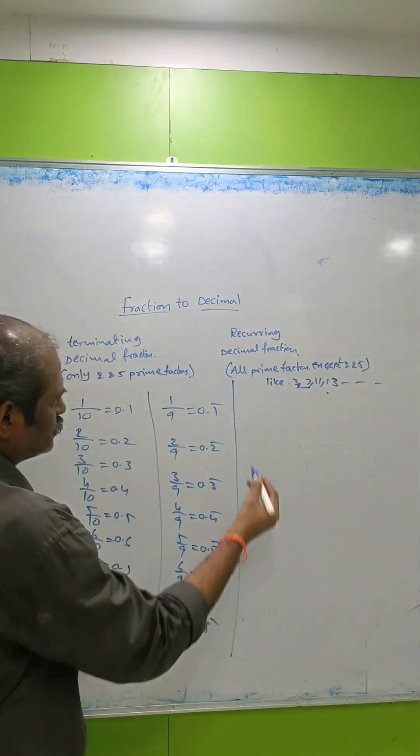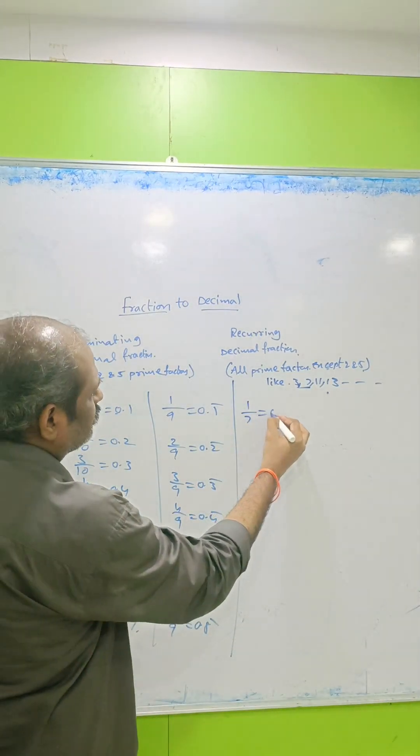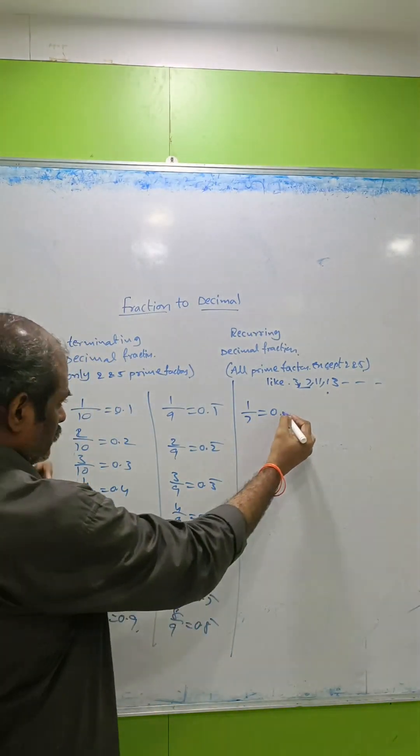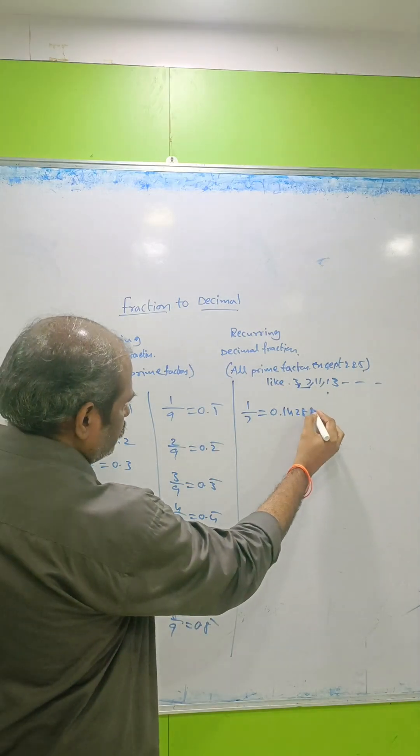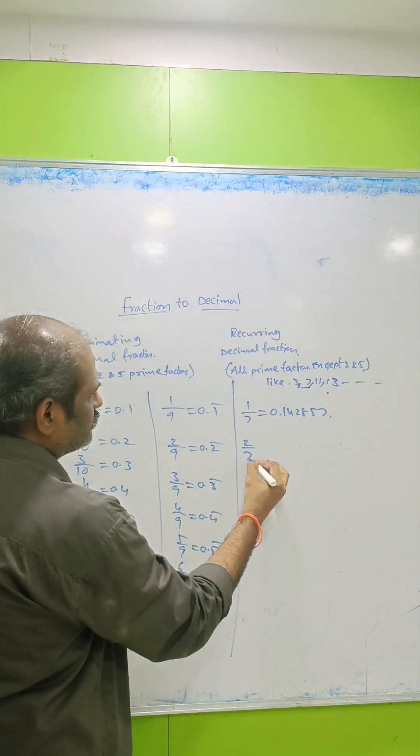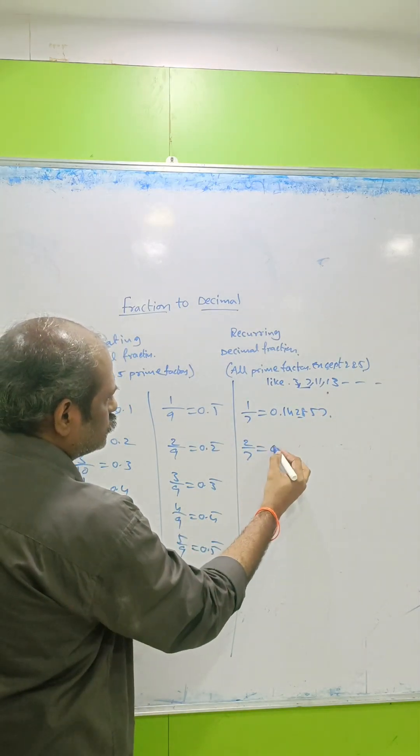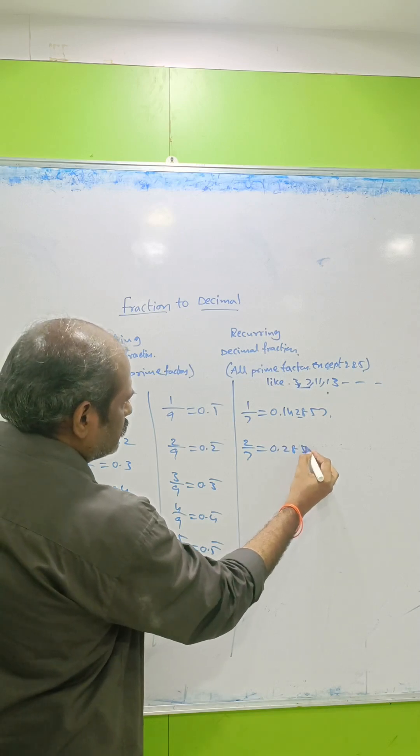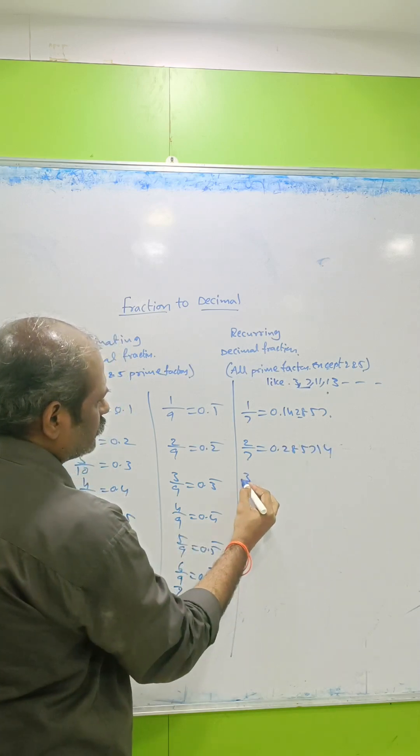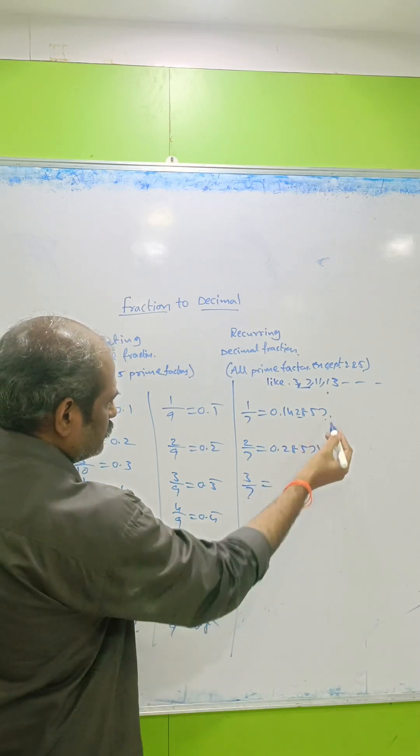Now let's check 1/7. What is 1/7? 0.142857. For 2/7, start with 2: 0.285714. For 3/7, it should start with...